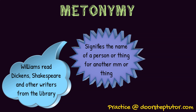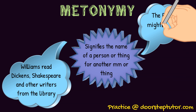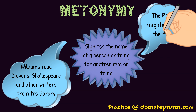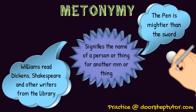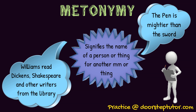Another example to make it clear: 'The pen is mightier than the sword.' Here, pen means the writer and the sword means the warrior. It is used for the thing which signifies what it is associated with — that is metonymy.